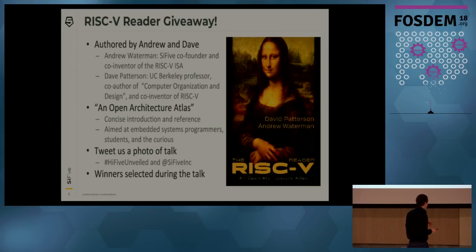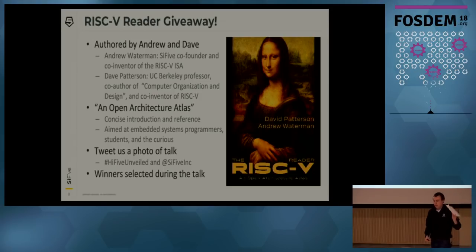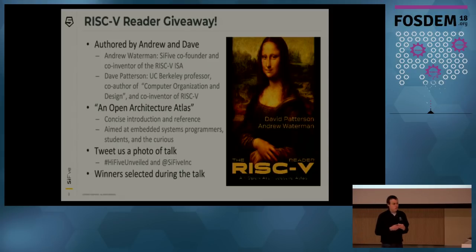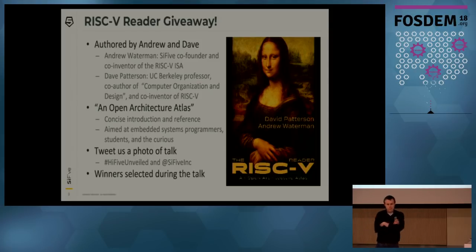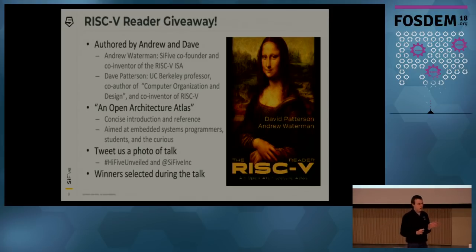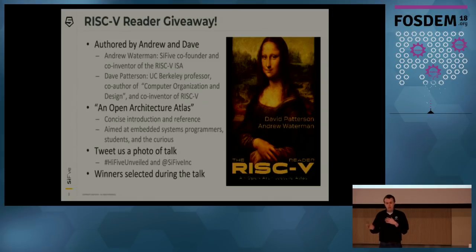For those of you less familiar with the RISC-V ISA, we've written a book and we're giving away signed copies. The book was written by Andrew Waterman and Dave Patterson, a professor at UC Berkeley. It's titled 'An Open Architecture Atlas' and is designed as an introduction to the RISC-V ISA for students, hobbyists, and anyone interested in computers. To get your copy, tweet a photo of the talk with hashtag #HiFiveUnveiled and at SiFive Inc. We have 10 books and will select winners during the talk.